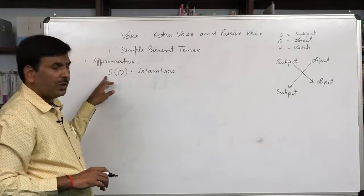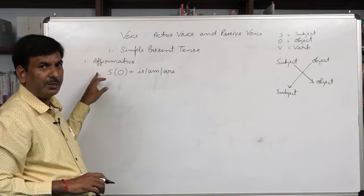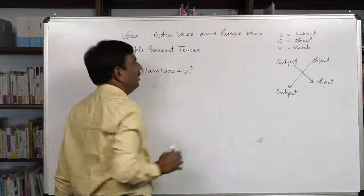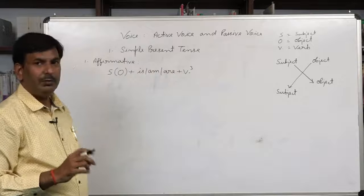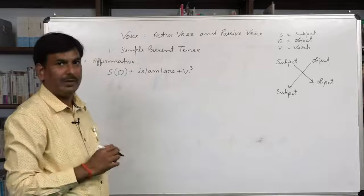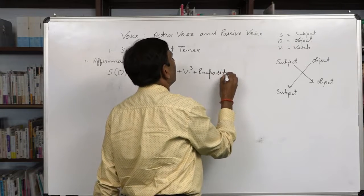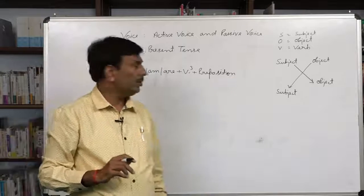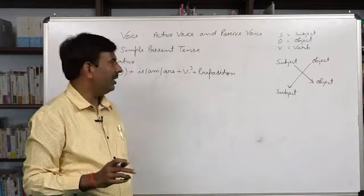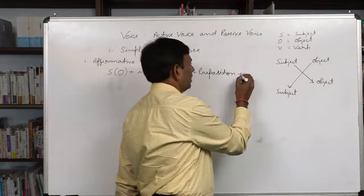If the subject — meaning doer or agent — is singular, then 'is' is to be applied. If the subject is 'I' — first person pronoun — then 'am', and with plural subjects 'are'. After that comes V3, meaning the third form of the main verb, also known as past participle. After that comes a preposition. Generally, the preposition 'by' is used in passive voice, but according to sense, 'at', 'in', 'to', and 'with' may also be used. After that comes the object.